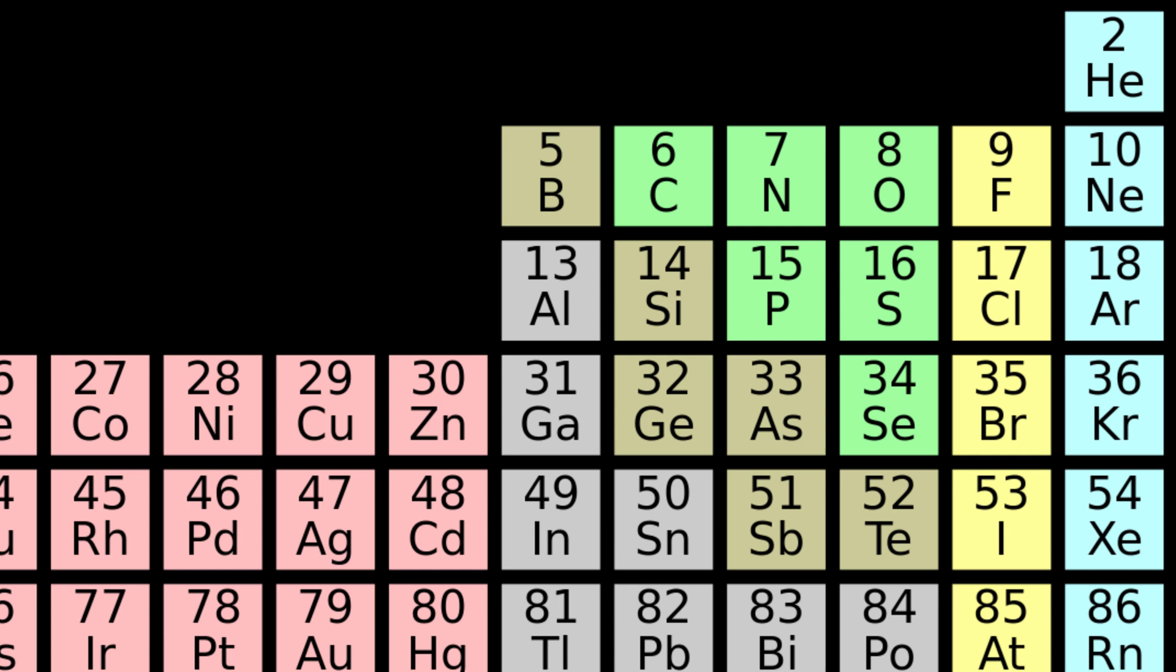If you look at the rightmost column of the periodic table, you will find the elements that do not react with others. Therefore, they are chemically inert. These are the noble gases. They are chemically inactive because their outermost shell already has 8 electrons. So, they don't need to make bonds with other atoms to become stable.